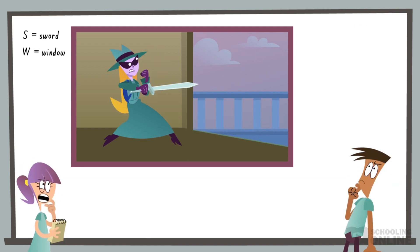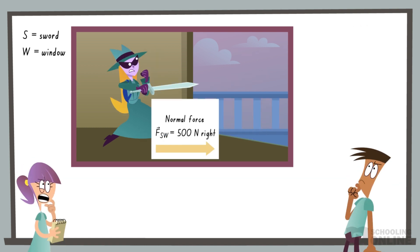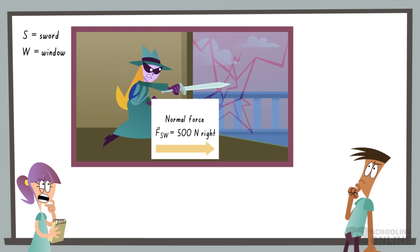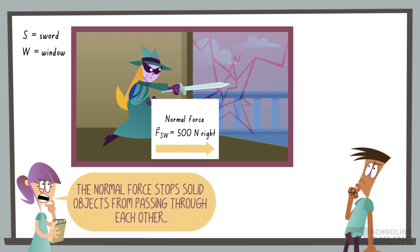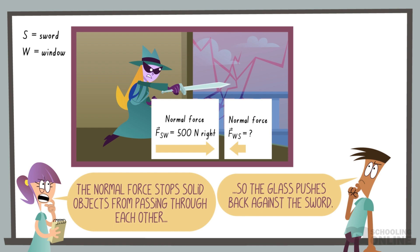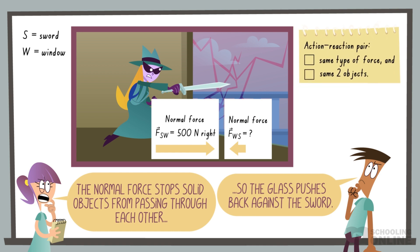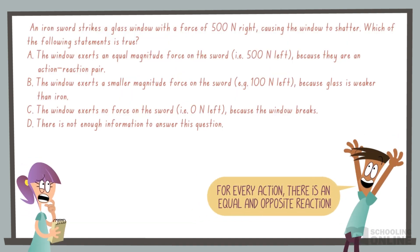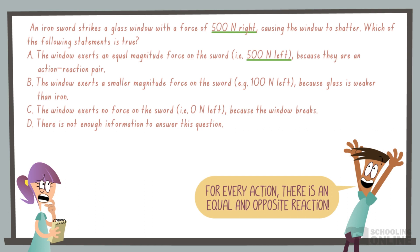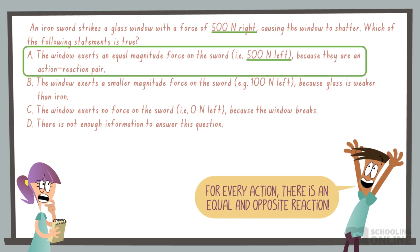Now, let's increase the applied force to 500 newtons right. The force is so large that the window shatters into multiple shards. Just like before, the normal force prevents the sword and glass from passing through each other. Therefore, the glass shard does exert some force against the sword. These are the same type of force and they act between the same two objects, so they are an action-reaction pair. By Newton's third law, they have equal magnitudes and opposite directions. The correct answer is A.